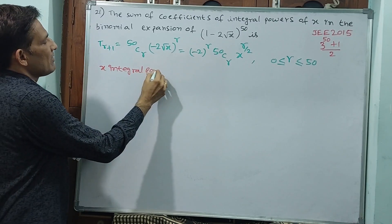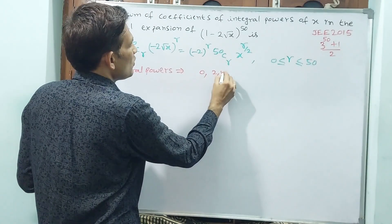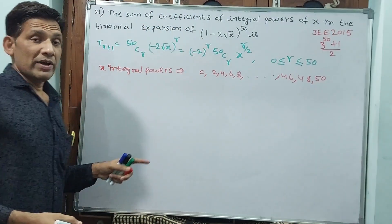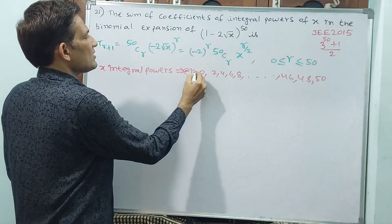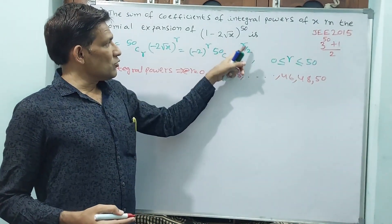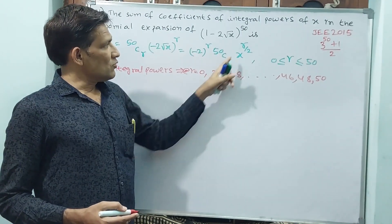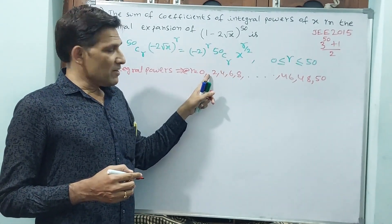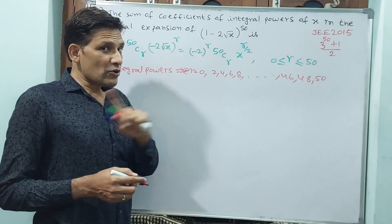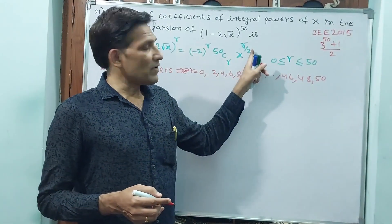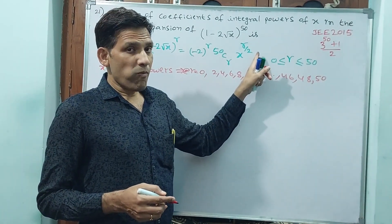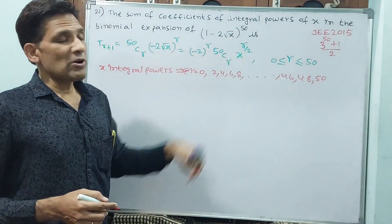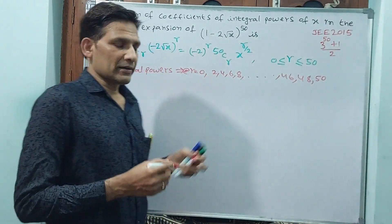For x to have integral powers, r must be even: 0, 2, 4, 6, ... 46, 48, 50. When r = 0, 0/2 = 0 (integer); when r = 2, 2/2 = 1 (integer). If r = 1, then 1/2 is not an integer; 47/2 is not integer; 48/2 = 24 (integer); 50/2 = 25 (integer). So only even values of r are taken.